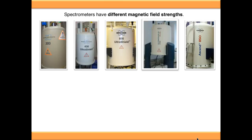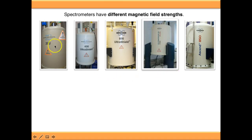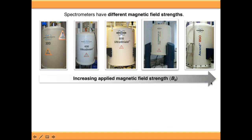We're talking about resonating at different frequencies, whereas the units of an NMR spectrum are always in PPM, or chemical shift. The magnetic field strength of different spectrometers is different, and this is often expressed in terms of the machine's megahertz rating — you can see this printed on the side of the machine. So this is a 300 megahertz spectrometer, this is a 400 megahertz spectrometer, and this is an 850 megahertz spectrometer.